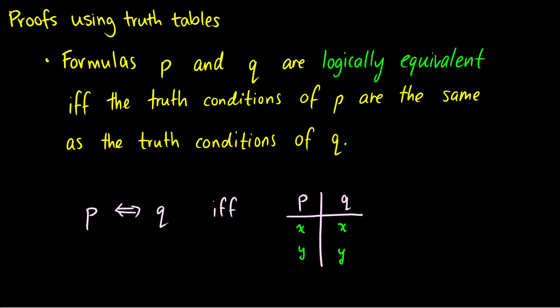Now that we've taken a look at truth tables, we can do some proofs using truth tables. Suppose I have two formulas, P and Q, and I want to know if they're logically equivalent to each other. They're logically equivalent if the truth conditions of P are the same as the truth conditions of Q, meaning if the truth table column outputs exactly the same values in the exact same order, then P is logically equivalent to Q. That means whenever we have P in our formula, we can substitute it with Q and it's the exact same thing.